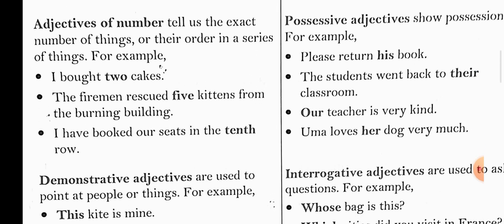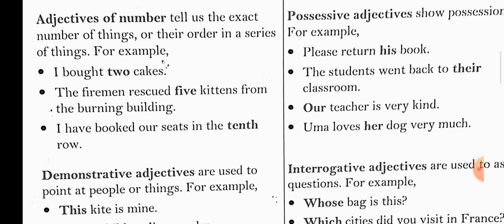Next, adjective of number. It tells us the exact number of things or their order in a series of things. For example: I bought two cakes. How many cakes? Two. Here the word 'two' is telling the number of cakes.